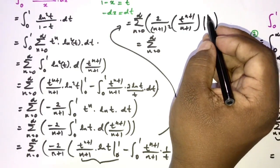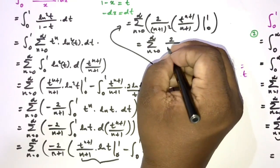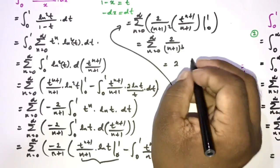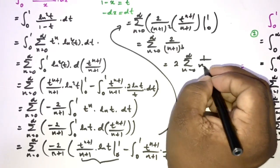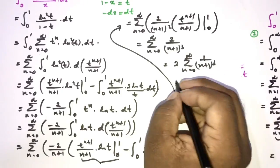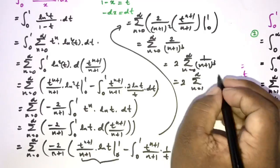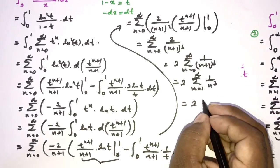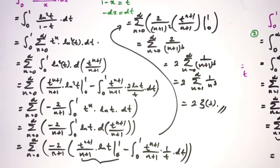This equals 2·Σ(n=1 to ∞) 1/n³ = 2ζ(3). This confirms the answer by all three methods. If you like this type of video, please subscribe to this channel. Thank you for watching.